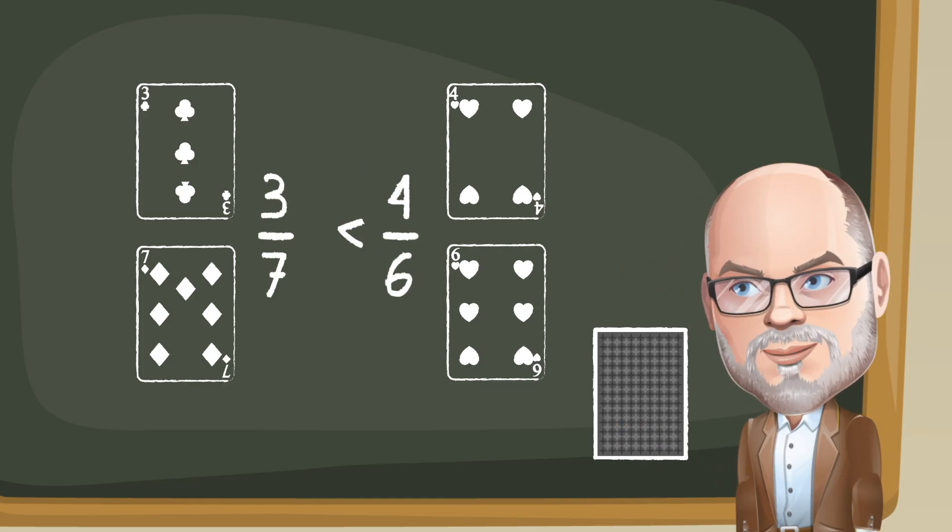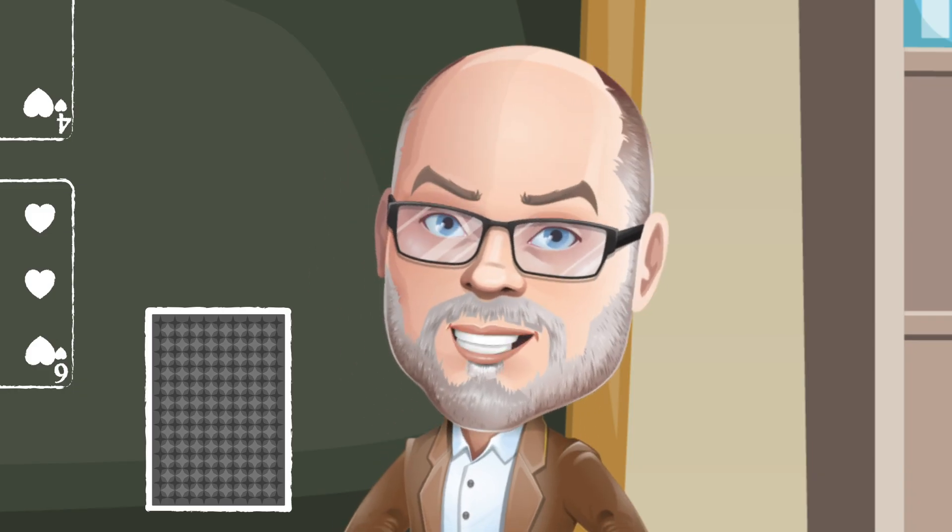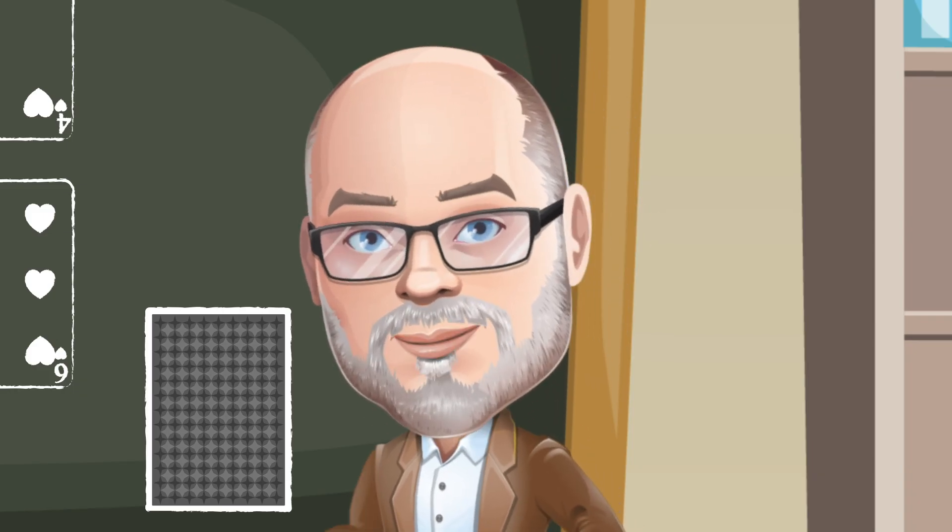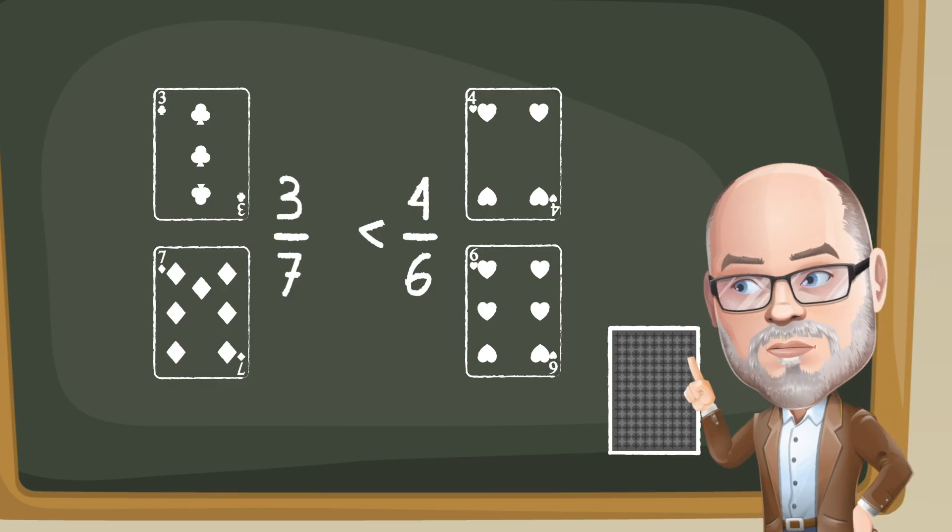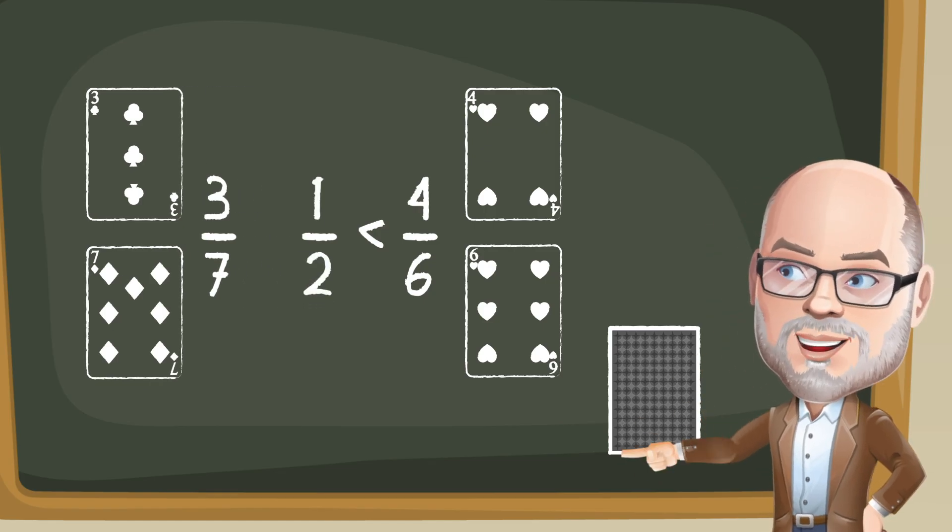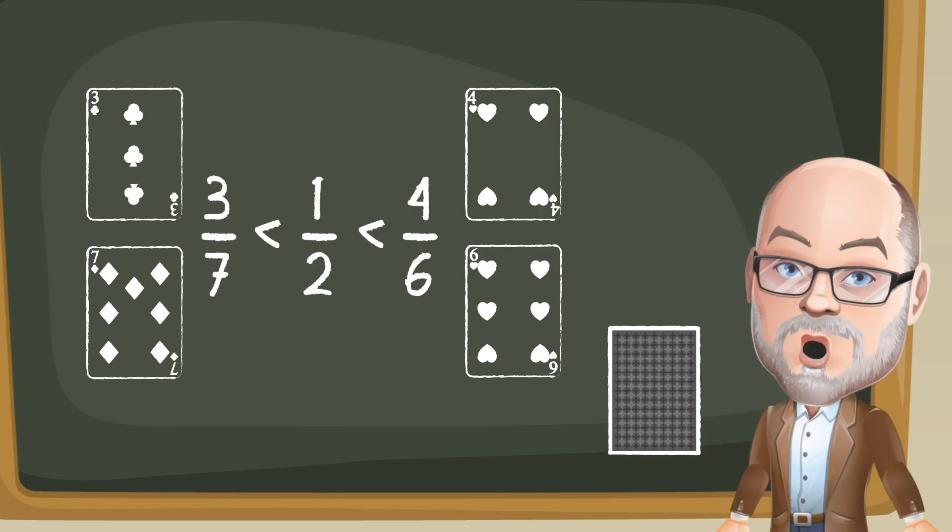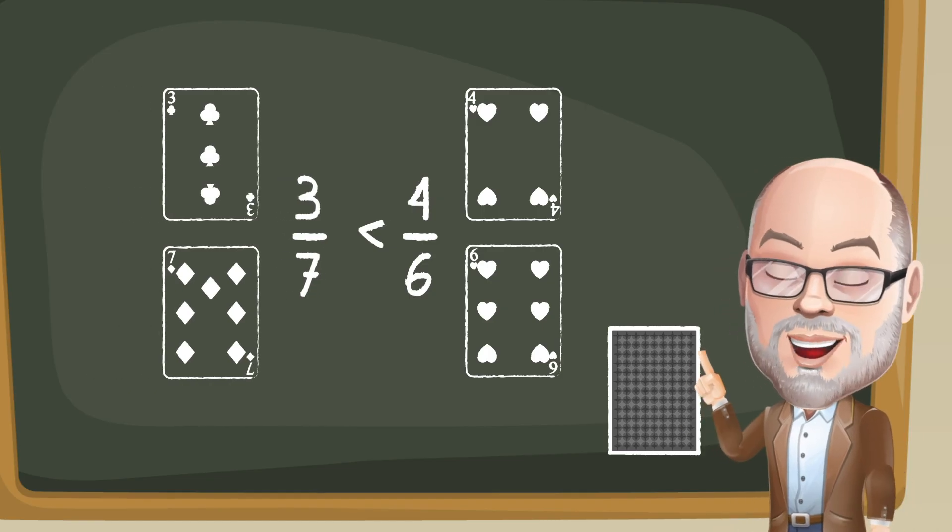Player two's fraction was greater, but before player two could take all four cards, they had to tell how they knew their fraction was greatest. They said that four sixths is more than one half, and that three sevenths is less than one half. So four sixths is greater than three sevenths.